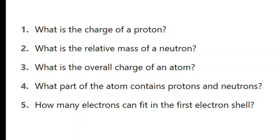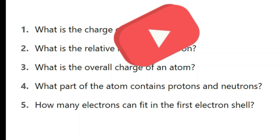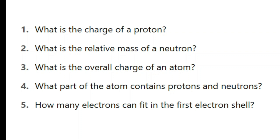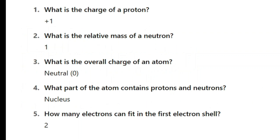Here are the first five questions. Pause the video and answer these. When you are ready for the answers, press play. Here are the answers. The charge on a proton is plus one — really the relative charge is plus one. The relative mass of a neutron is one. Overall charge of an atom is neutral because in any atom, the number of electrons is the same as the number of protons.